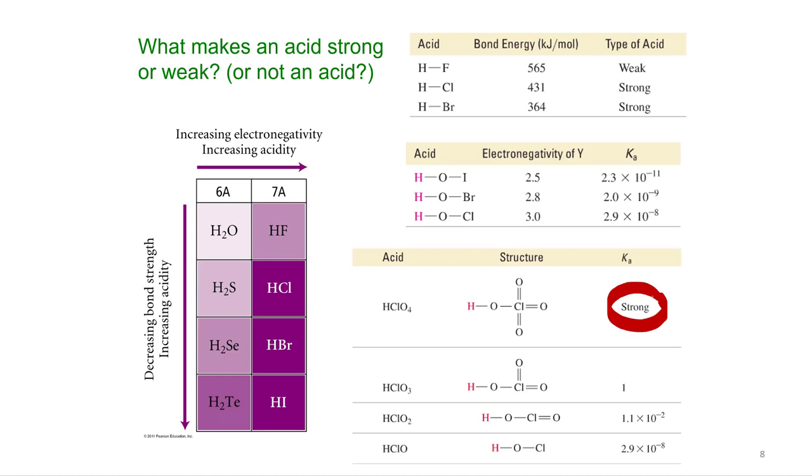You said the bond between the oxygen and the hydrogen is very weak, that's why it's a strong acid. Yes. Because it's bonded to five very electronegative atoms that are pulling for those electrons, weakening that bond. Yes. The weaker the bond, the stronger the acid. That's a good little saying.